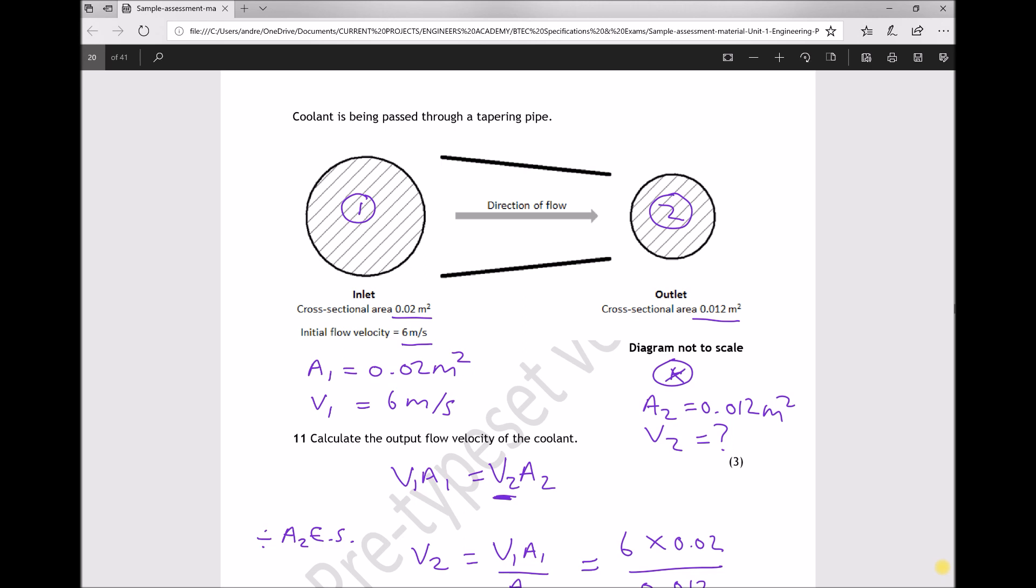Now if we refer back to our diagram there, we have the duct or the pipe tapering or becoming narrower, and as we would expect, as the pipe becomes narrower the velocity speeds up because the volume flow rate needs to remain the same. So our answer of 10 metres per second there we can assume is accurate.